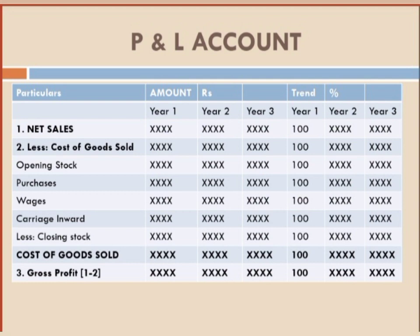Now when cost of goods sold comes, we will minus it from net sales. You will get the difference — that difference is called gross profit. Point 1 is net sales, Point 2 is cost of goods sold. So net sales minus cost of goods sold equals Point 3, which is your gross profit. This is basically the format of the panel account.